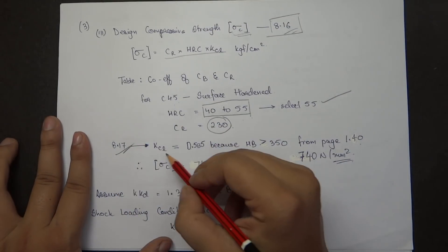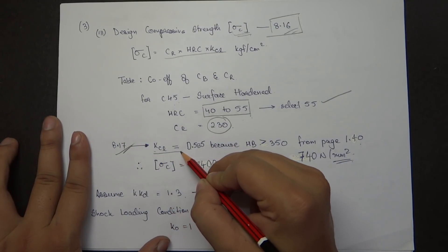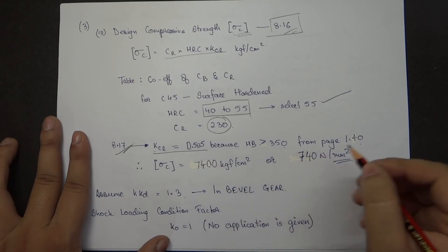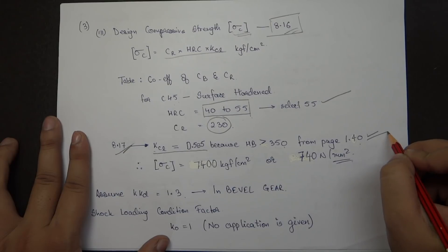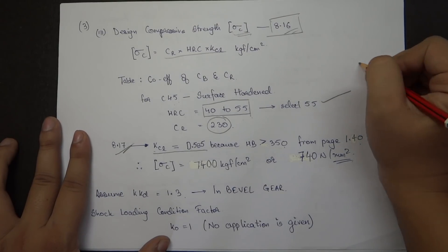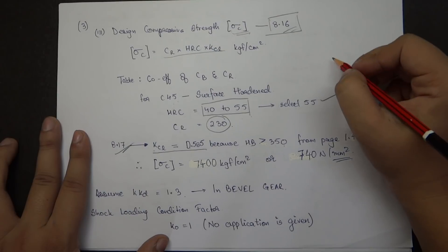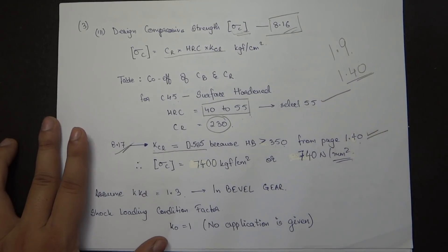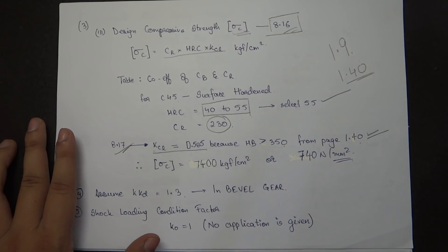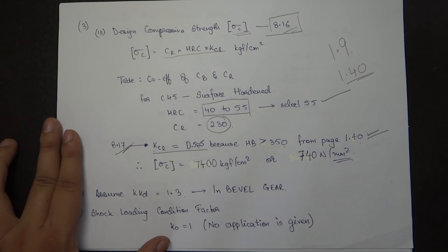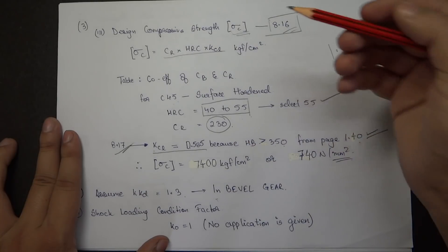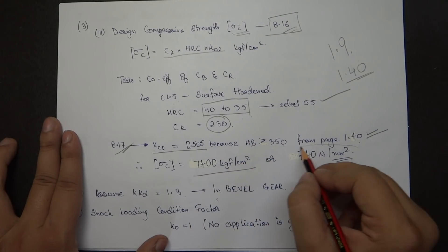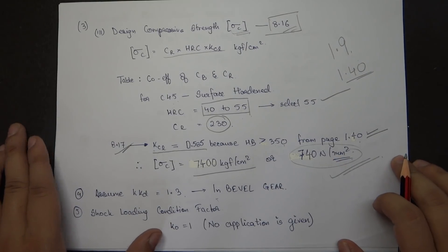From page 8.17, K_CL is 0.585 because HB is greater than 350 (from page 1.40). It's important to remember these page numbers — 1.40 for this step and 1.9 for the previous step. Multiplying all three values, Sigma_C is 7400 kgf/cm² or 740 Newton per mm square.